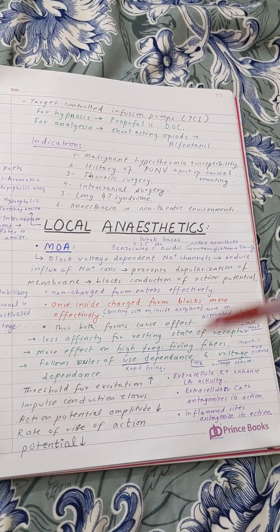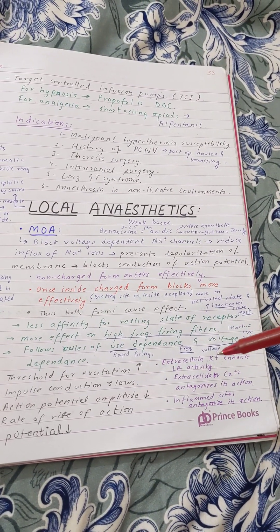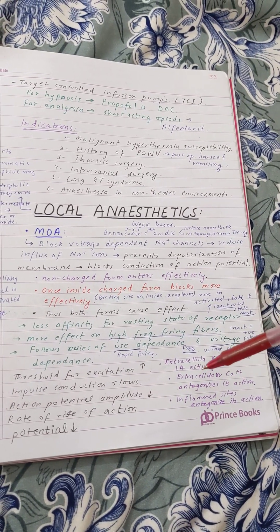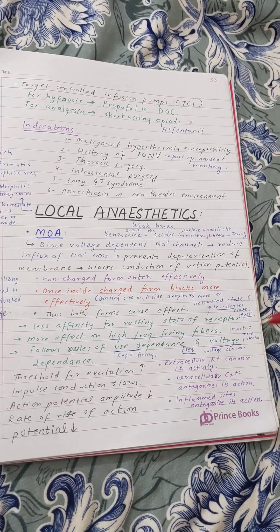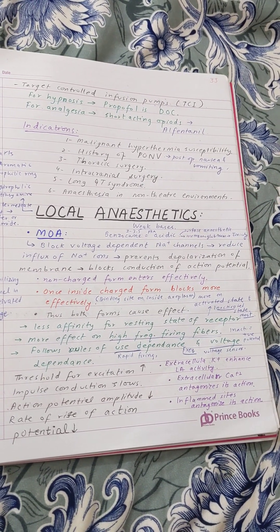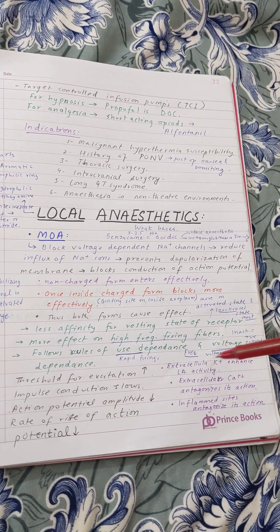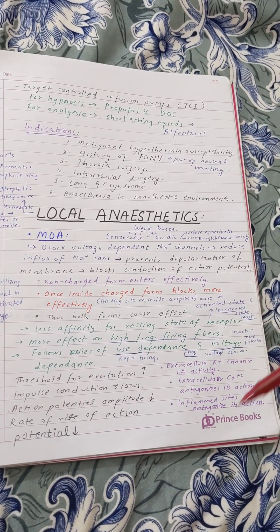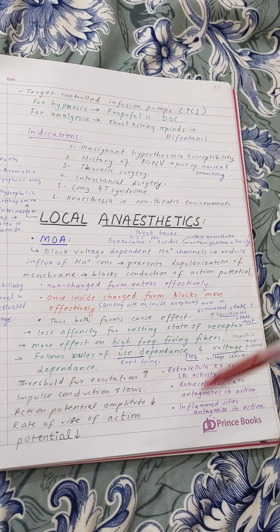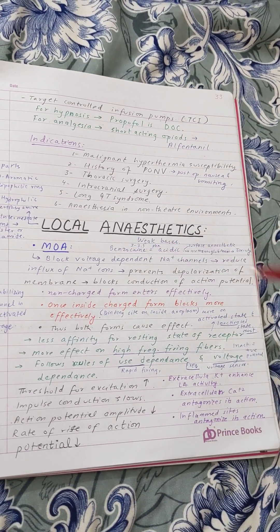In the extracellular fluid, potassium increases and enhances the activity of local anesthetics, while calcium in the extracellular fluid antagonizes the action of local anesthetics.